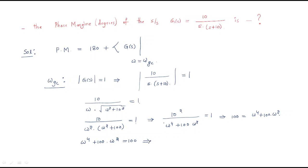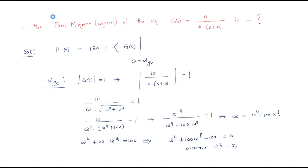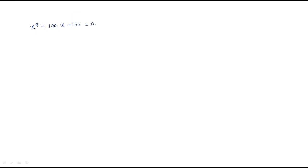This gives the equation ω⁴ + 100ω² - 100 = 0. To solve this, let x = ω², so we get x² + 100x - 100 = 0. Applying the quadratic formula, x = (-100 ± √(10000 + 400)) / 2.